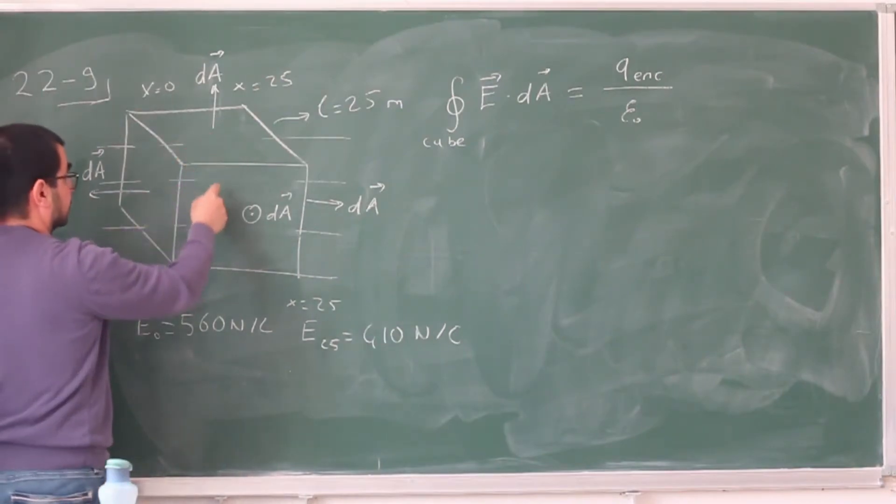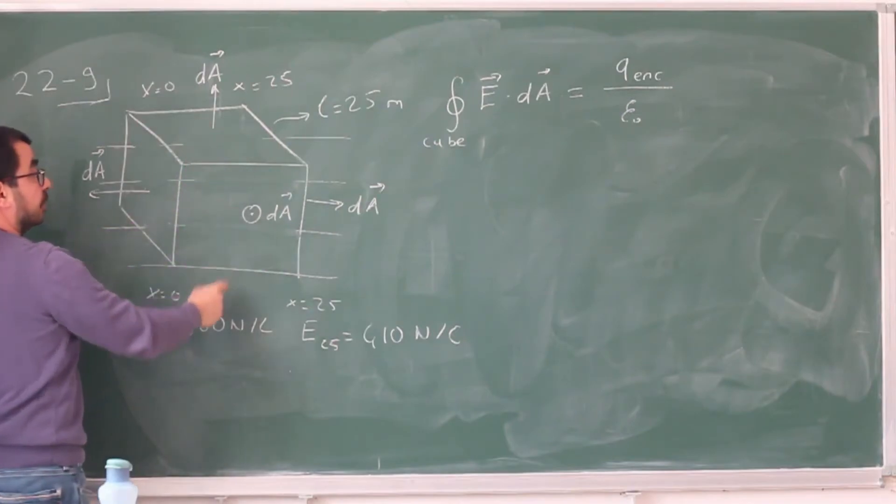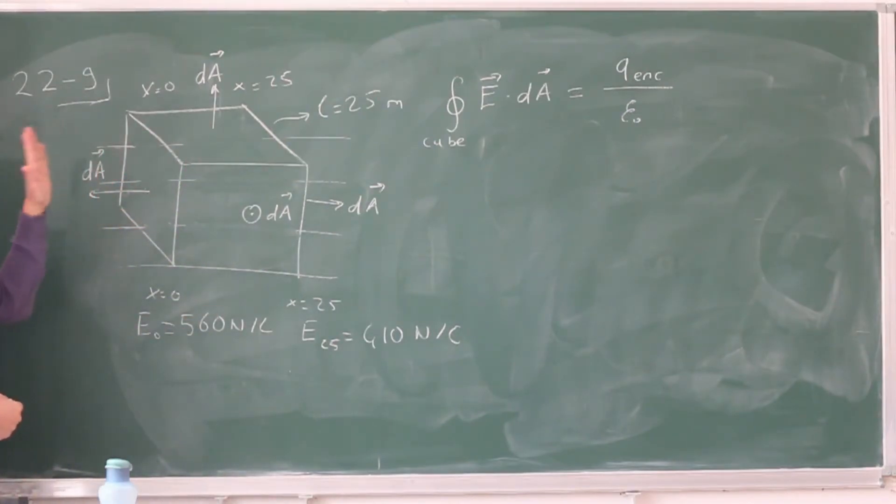Now, for these four faces, except for the left face and the right face, this dA element is going to be perpendicular to the electric field. Electric field is always horizontal. It's either up, into the blackboard, down, or out from the blackboard. It's always going to be perpendicular to this horizontal electric field. So those identically vanish.